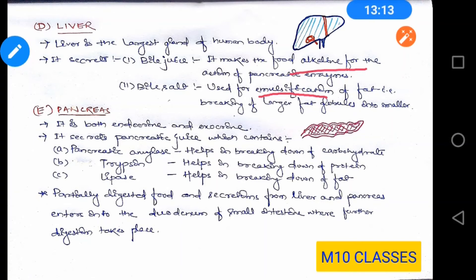Then comes the pancreas — a fact to note is that the pancreas is both an endocrine and exocrine gland. Pancreatic juice contains pancreatic amylase, trypsin, and lipase. Just as salivary amylase digests starch, pancreatic amylase also helps in breaking down carbohydrates. Trypsin, like pepsin in the stomach, helps in breaking down protein. Lipase helps in breaking down fat. The partially digested food along with secretions from the liver and pancreas enters the duodenum of the small intestine where further digestion takes place.